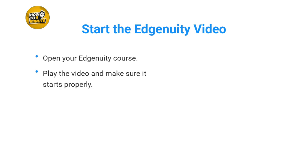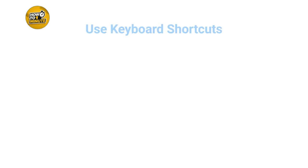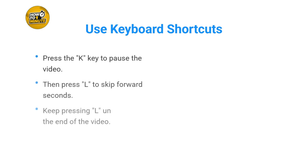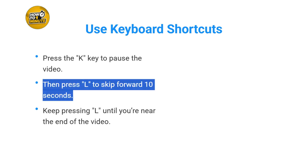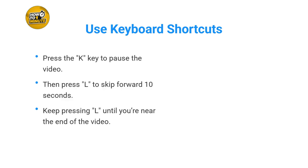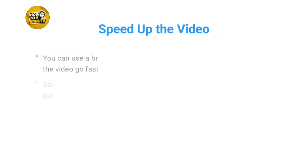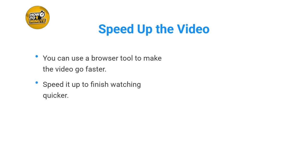Make sure the video is playing properly. Now, press the K key on your keyboard to pause the video. Then, press the L key to fast-forward the video by 10 seconds. Keep pressing L until you reach near the end of the video. This way, you can move through the video quickly.